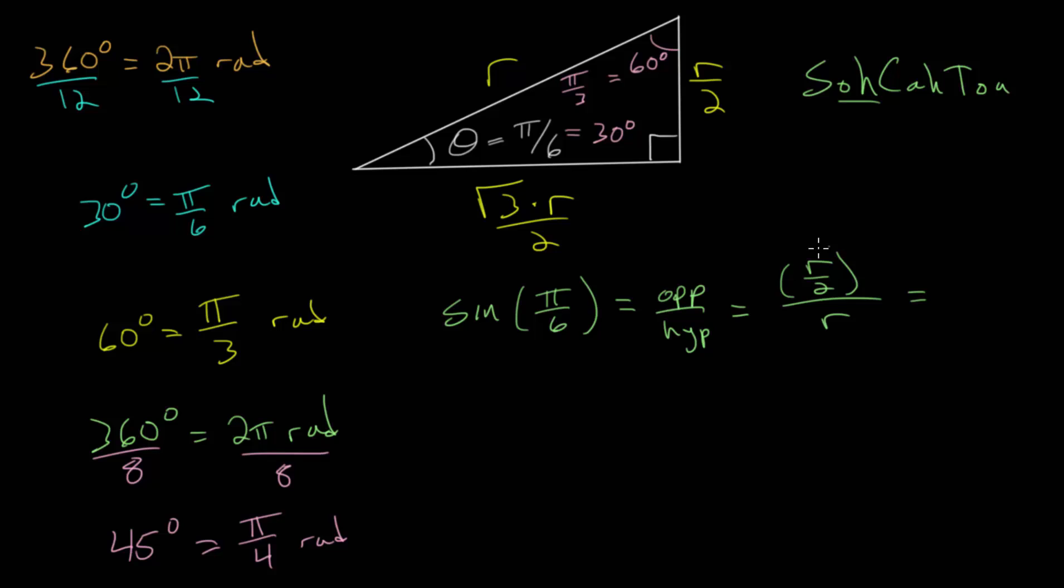If we simplify this, the R in the numerator and denominator will cancel, and we will just get one half. Or you can think about it that we are dividing by a fraction, so you can set it up as multiplication. Since when you divide by a fraction it's the same as multiplying by that fraction flipped over, the R's cancel and we get one half.